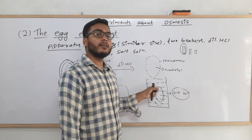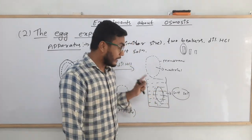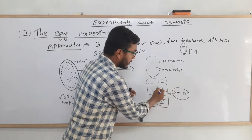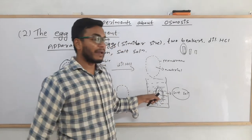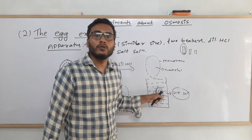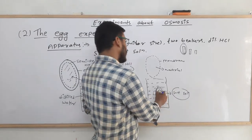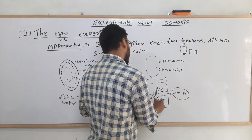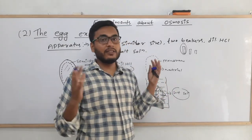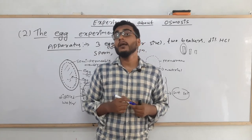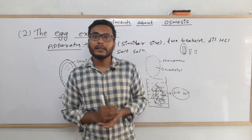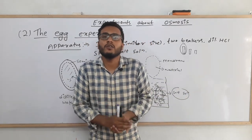In the salt solution case, there are solute particles in the water, making it a concentrated solution. The inside material of the egg behaves as the dilute solution in comparison. As a result, water molecules from inside the egg start to move outside through the membrane, decreasing the egg's size — it actually shrinks. This is the egg experiment that helps us prove the osmosis phenomenon.